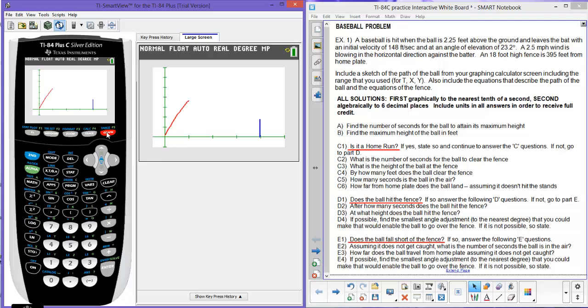There's the fence in blue. There's the path of the ball in red, and I put the rest of it in green for grass, I guess. And as you can see, it clearly is a home run.